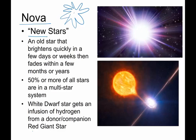So what a nova is, these are old stars that brighten very quickly within a few days or weeks. They last for a few months or a few years, and then they go away.